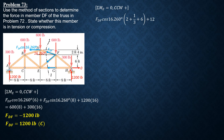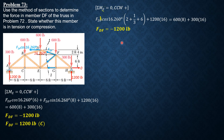The moment equation gives FDF cosine 16.26 degrees times (2 + 1/3 + 6) plus 1200 times 16 equals 600 times 8 plus 300 times 16, which yields the same result: FDF = negative 1200 pounds, or 1200 pounds compression. That's it for this problem.